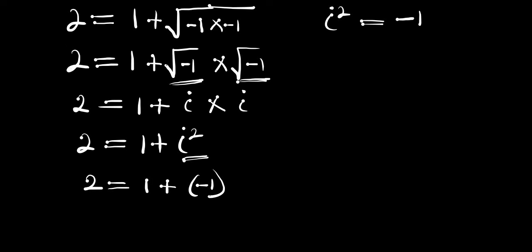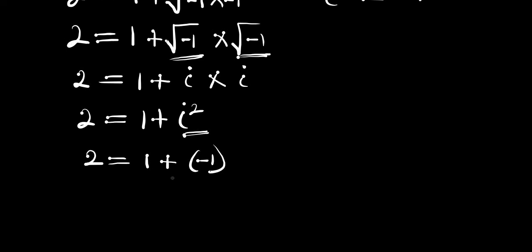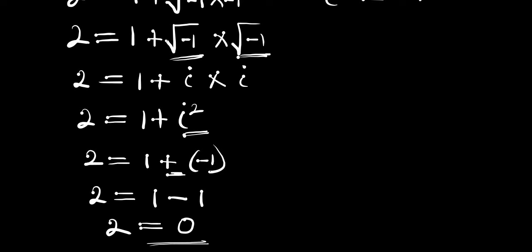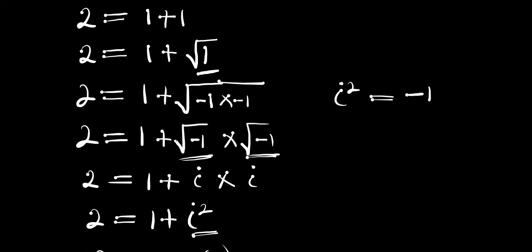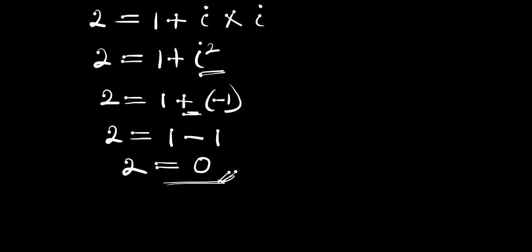Now if you multiply this positive and this negative you are going to get negative. So we have 2 equals 1 minus 1, and 1 minus 1 is 0. So right now this has given us 0 instead of 2 equals 2. So where did we get it wrong? That's what I want us to find out — drop a comment in the comment box and tell me where we got it wrong.